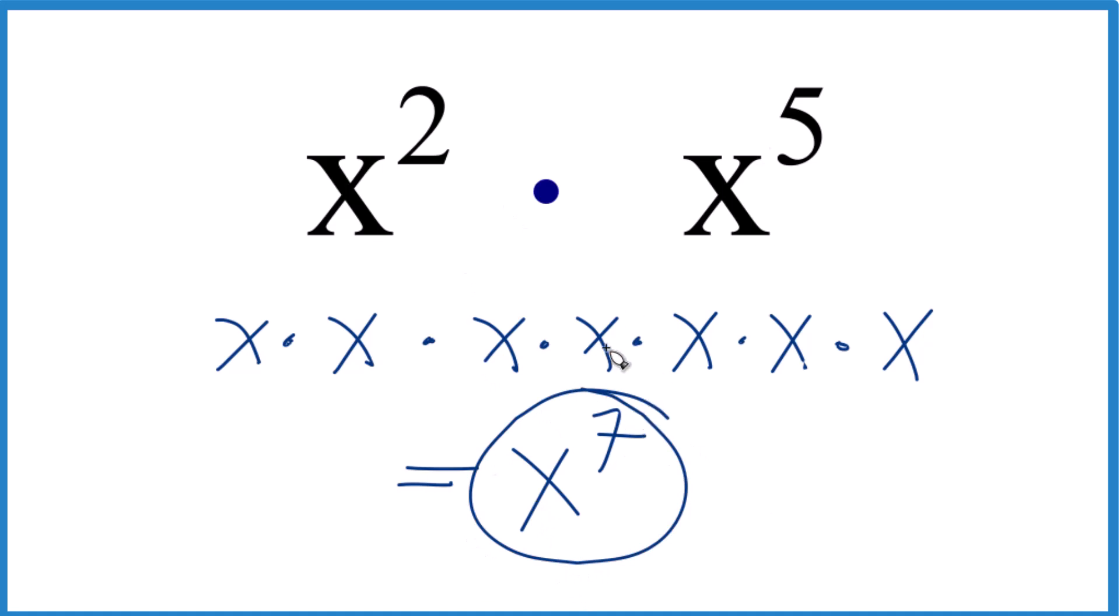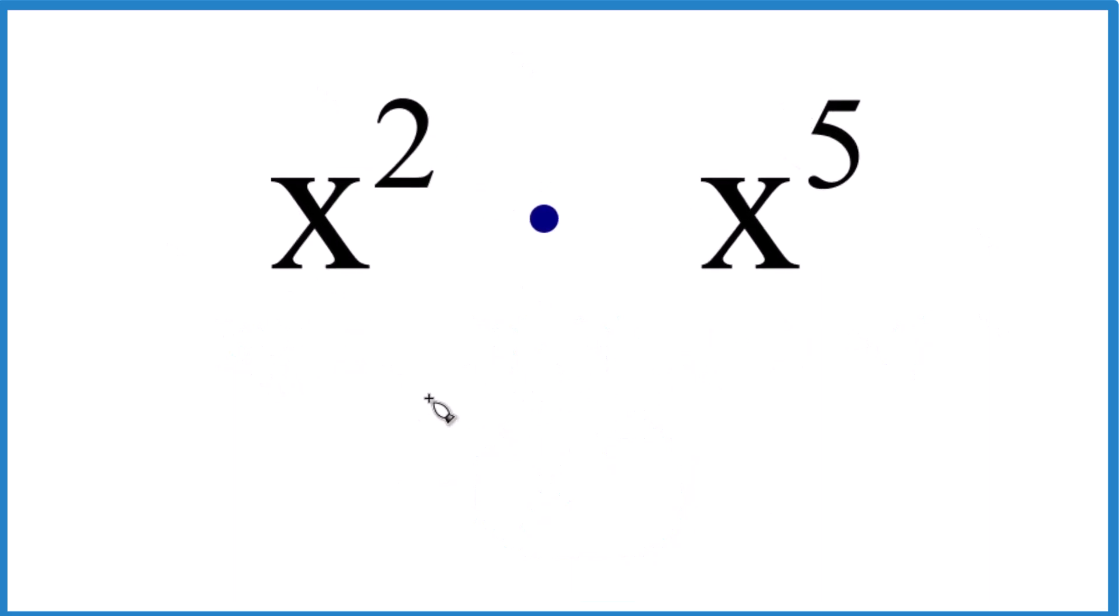There is another way we could do this, perhaps a little bit more general. Let's give it a try. We could consider x to the second times x to the fifth. We could just write that as x to the two plus five.